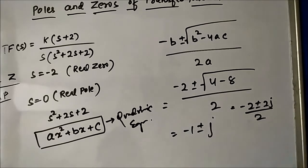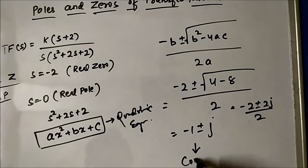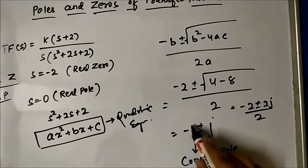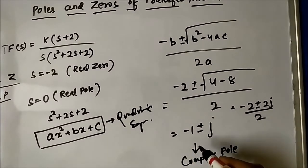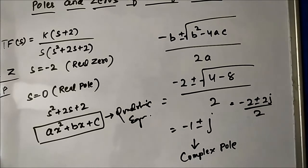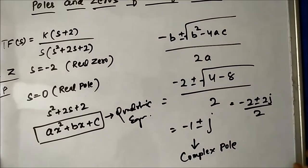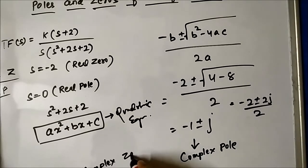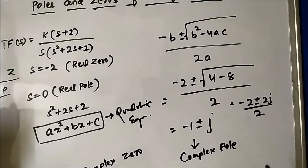So these are complex poles. You may come across complex roots — there can be complex zeros as well as complex poles — so you should know how to determine them.